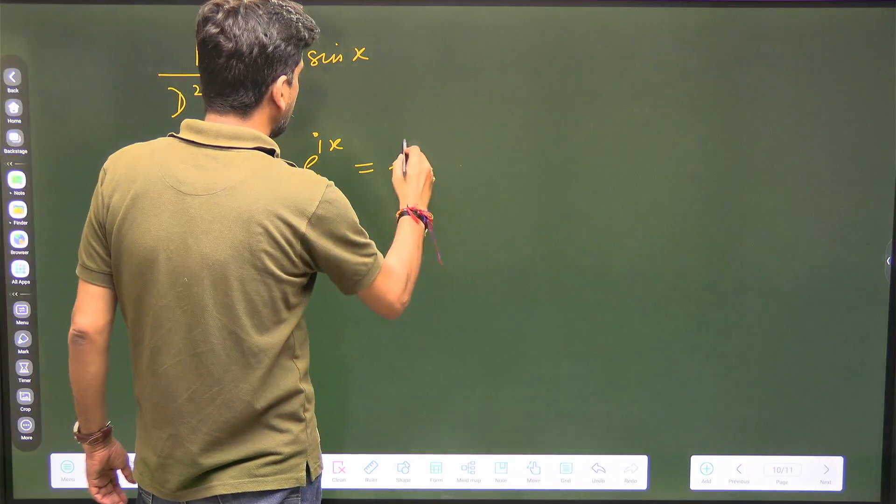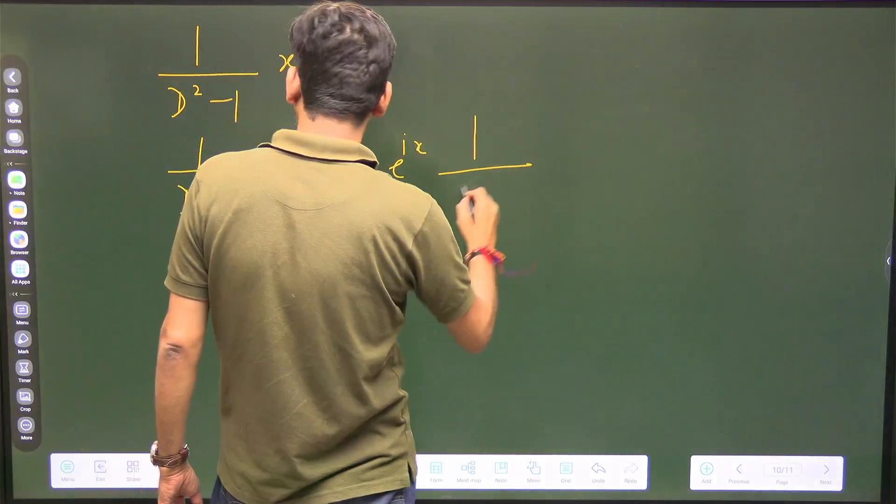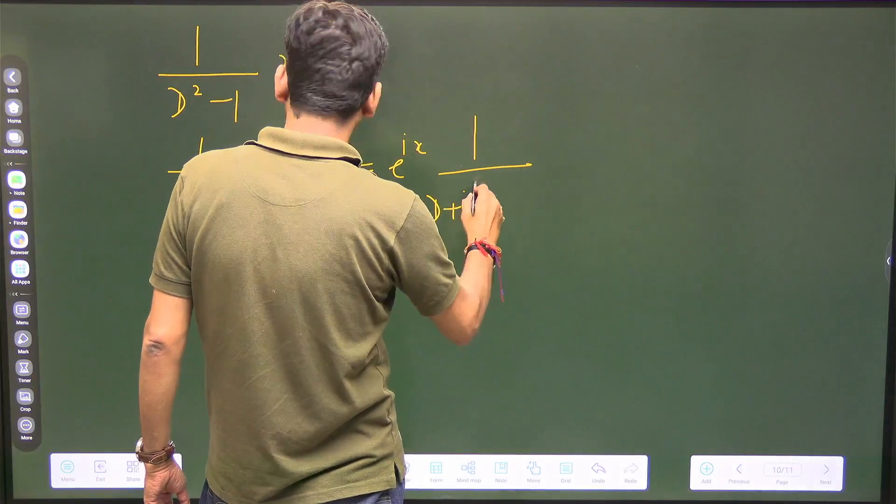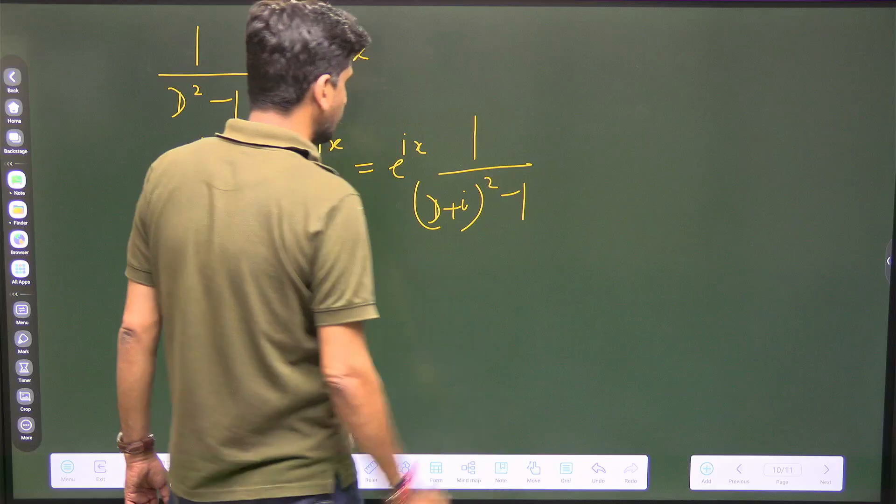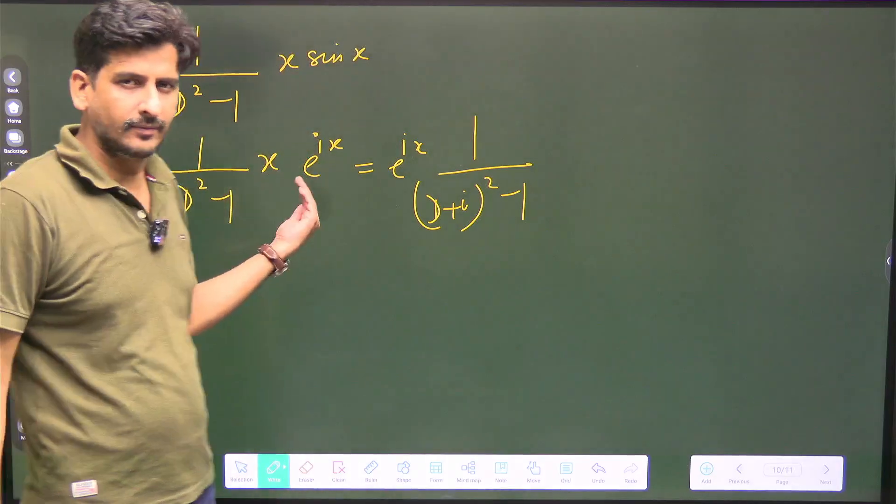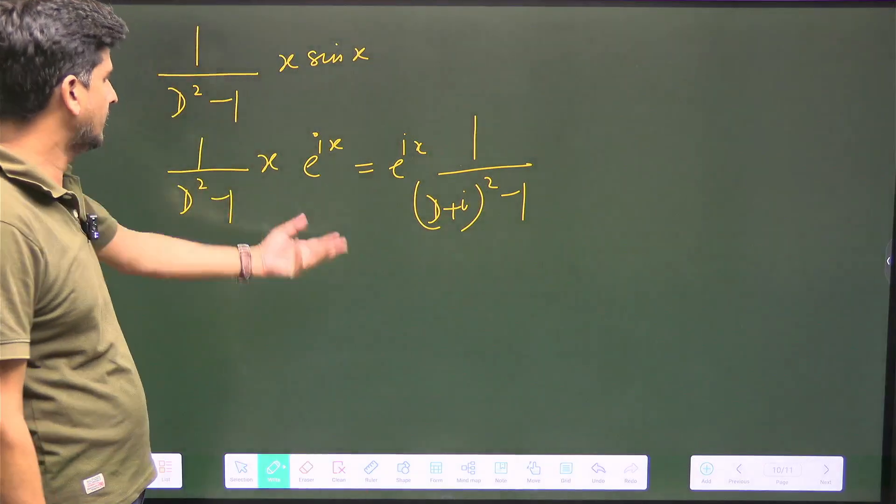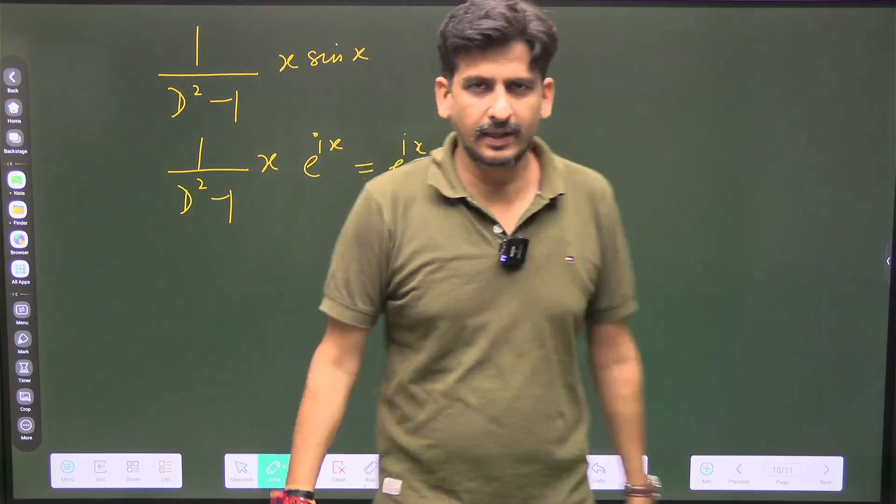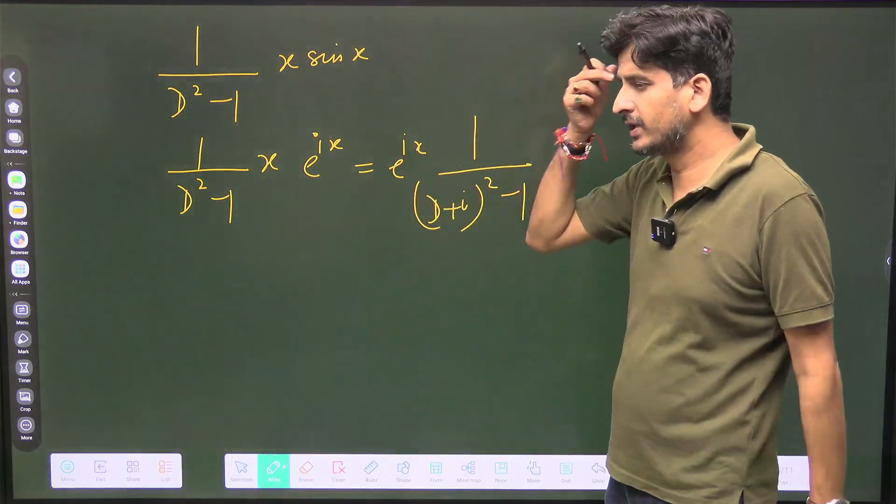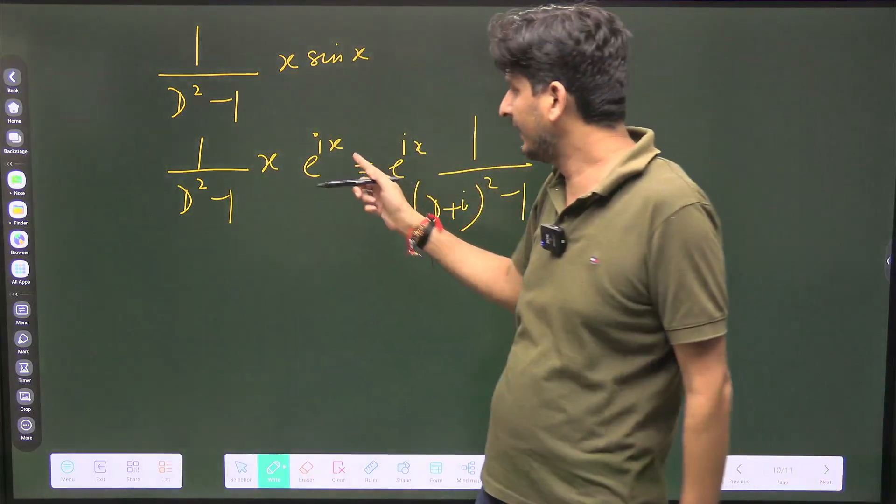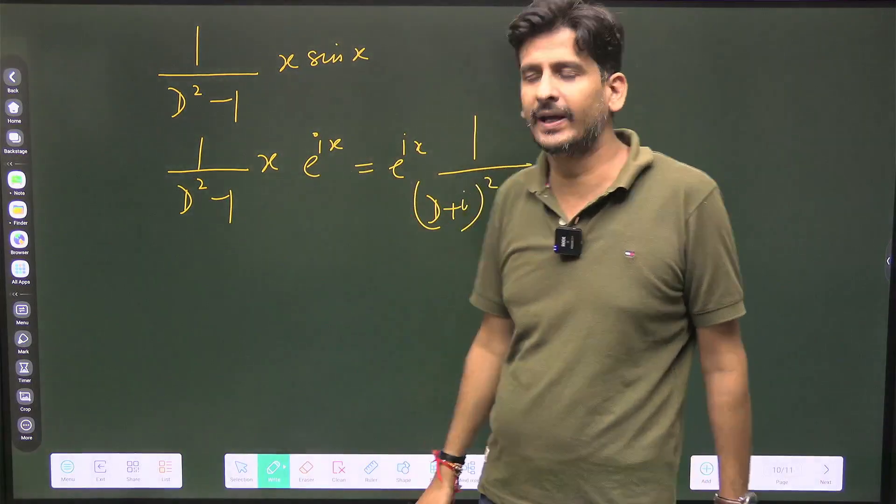Just take e^(ix) outside and d will be replaced by (d + iota)² - 1. So when some function has an exponential term, you can take the exponential outside and d is replaced by d + a. If the exponential term is e^(ax), here it is e^(iota x).